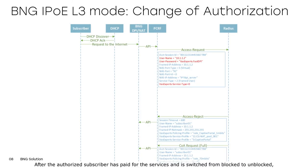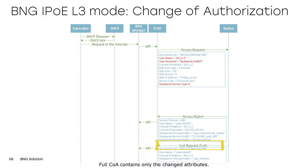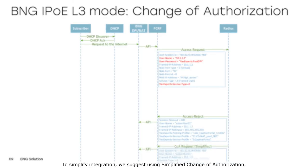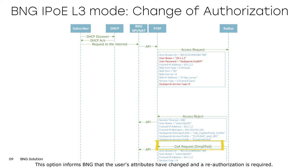After the authorized subscriber has paid for the services and is switched from blocked to unblocked, in order not to break the current session, change of authorization can be sent from the RADIUS server. Full COA contains only the changed attributes, which signals BNG to change only those attributes. To simplify integration, we suggest using simplified change of authorization. This option informs BNG that the user's attributes have changed and a reauthorization is required. Upon receiving such a notification, BNG sends a regular access request to the RADIUS server.